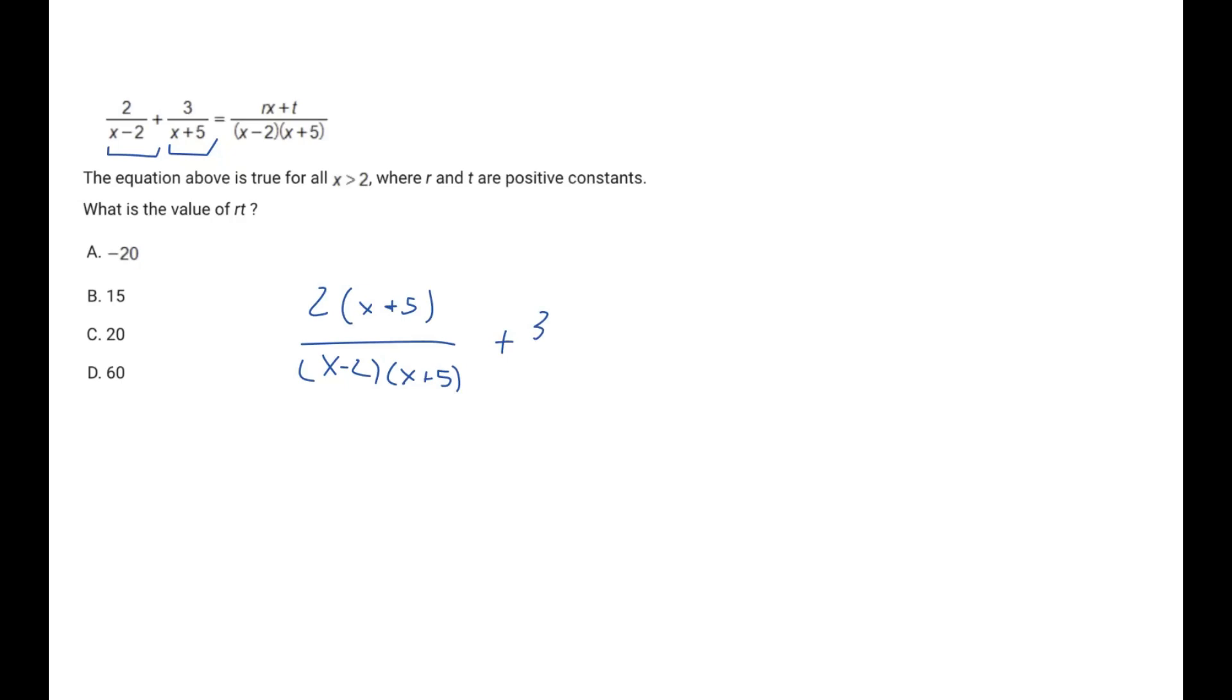The same thing is going to happen to the second term. We have 3, and the common denominator here that we want to add is (x-2). So 3 times (x-2) over (x-2) times (x+5). And this is going to equal (rx+t) over (x-2)(x+5), because they give this to us. So this is all going to have (x-2) times (x+5) as the common denominator, and so we can just get rid of it.